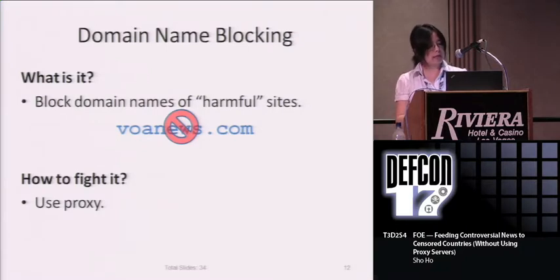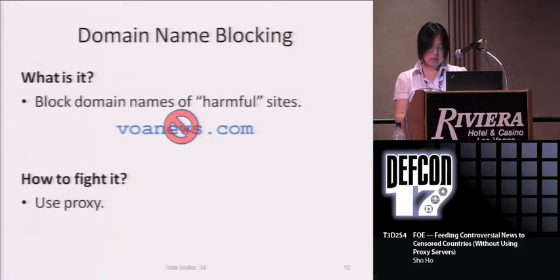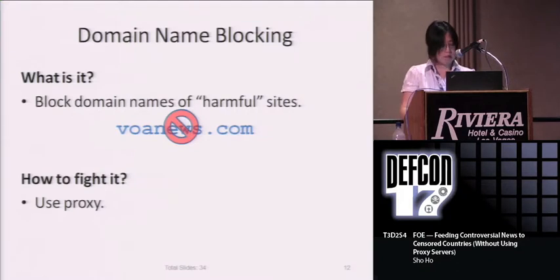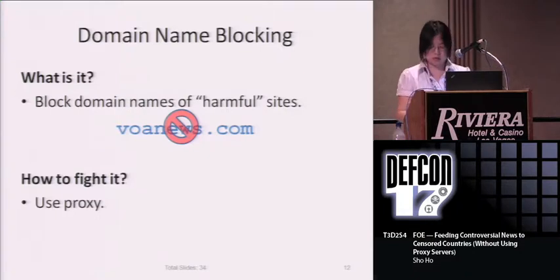Domain name blocking is a much more flexible way for blocking websites. It doesn't matter what IP addresses you change to — as long as you don't change your domain name, your site will be blocked. To fight domain name blocking, we can tell users to use proxy servers. After a while, the censors realize there are just too many harmful domains and they can't keep track of all of them. So they implement another censorship technology.